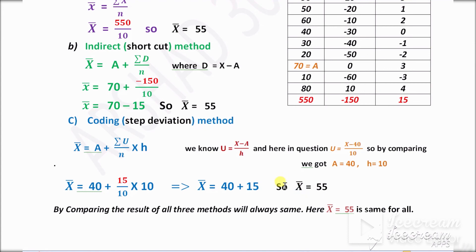Comparing the results of all three methods — direct, indirect, and coding — all three give the same answer: x-bar equals 55. So all three methods will always produce the same arithmetic mean.